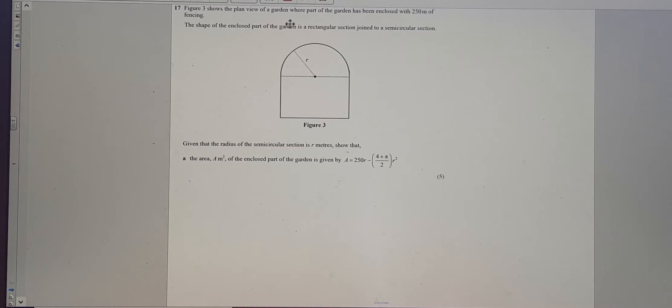The shape of the enclosed part of the garden is a rectangular section joined to a semicircular section. So it even just confirms what part the enclosed section is. It's all of this rectangular bit with this semicircular bit on top.